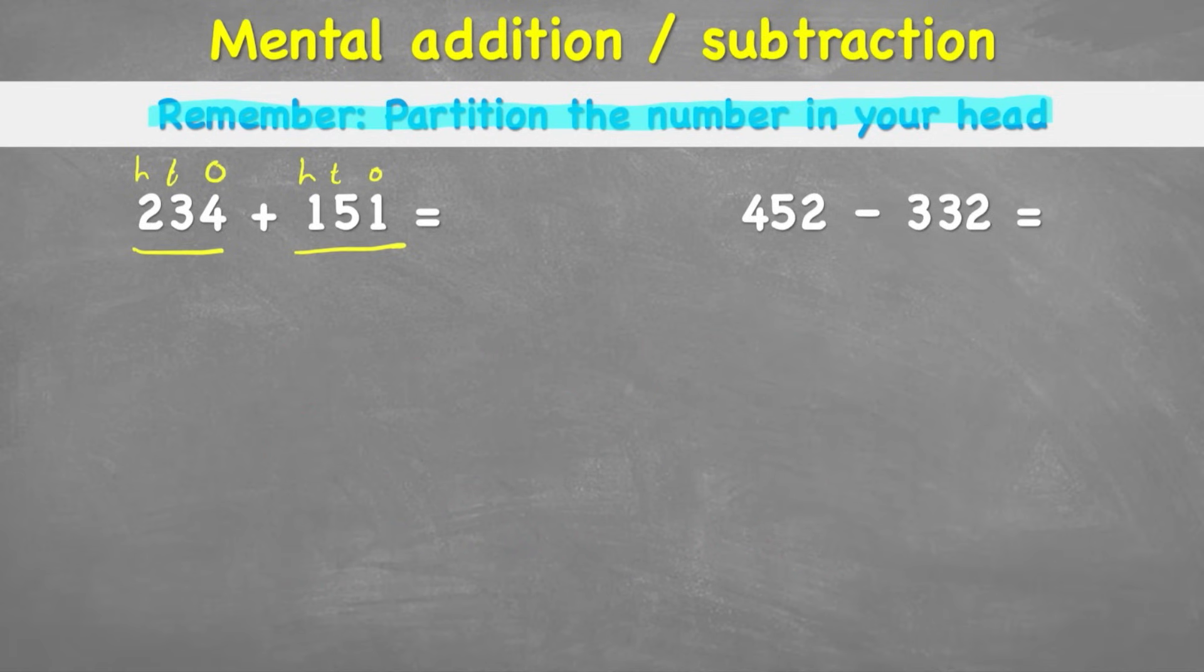Let's look at the second one, the subtraction question of 452 subtract 332. And let's do this all in my mind without writing anything down. So 452 subtract 332. Well, I can hear that my ones is going to be 2 subtract 2, which obviously equals 0.